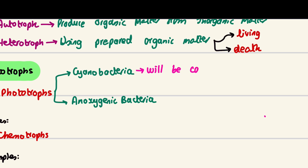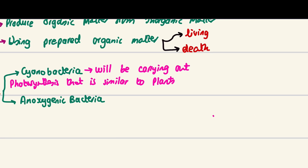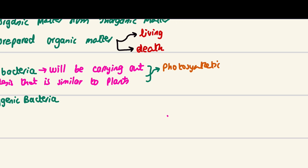Cyanobacteria carry out photosynthesis that is similar to plants — almost the same thing — just a small difference: their photosynthetic pigments are slightly different. I have a video on that as well. Cyanobacteria are a very small class.